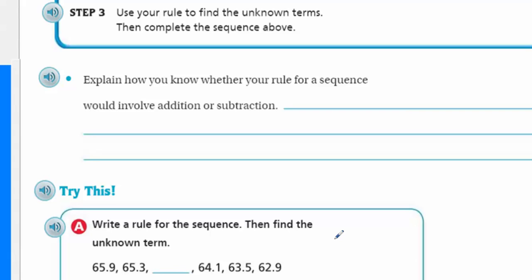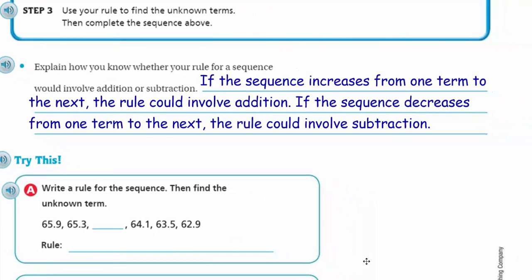So the rule we determined was, yes, subtract, because we were subtracting. Subtract 1 and 3 tenths. That's what we were subtracting. Use your rule to find the unknown terms. We already did that, too. And then complete the sequence above. Now, what do we have here? It says, explain how you know whether your rule for a sequence would involve addition or subtraction. We talked about that, so this seems really easy to me. It just means, if the sequence increases from one term to the next, well, then the rule could involve addition, wouldn't you think? And of course, if the sequence decreases from one term to the next, well, then the rule could involve subtraction. I don't know. It's just me. But you know, I just kind of feel like I could just kind of bring a whole small group of little cave boys and girls, and they could do this math. It's pretty easy.